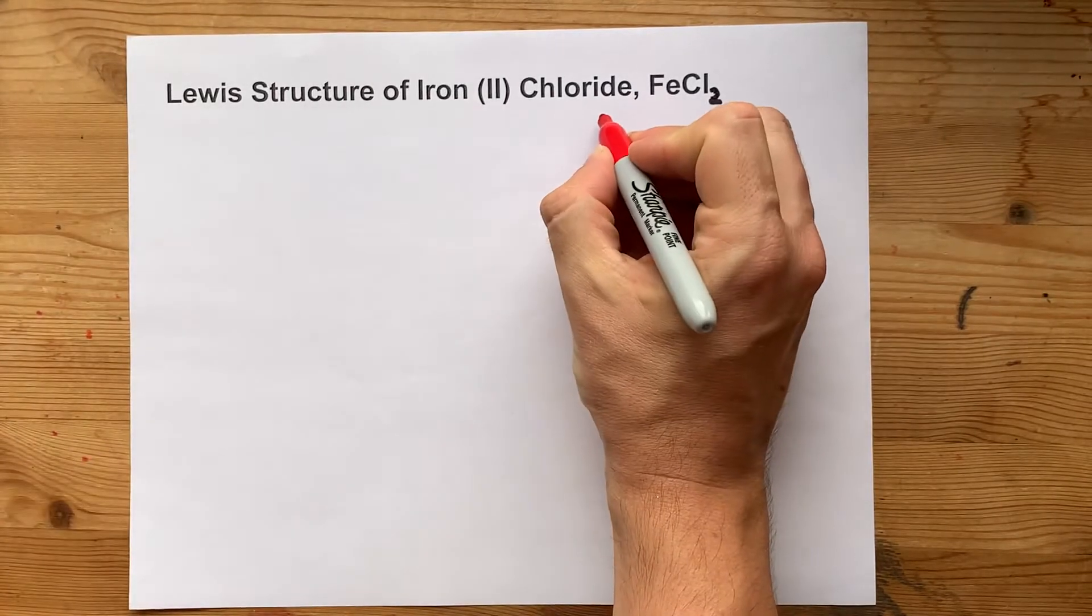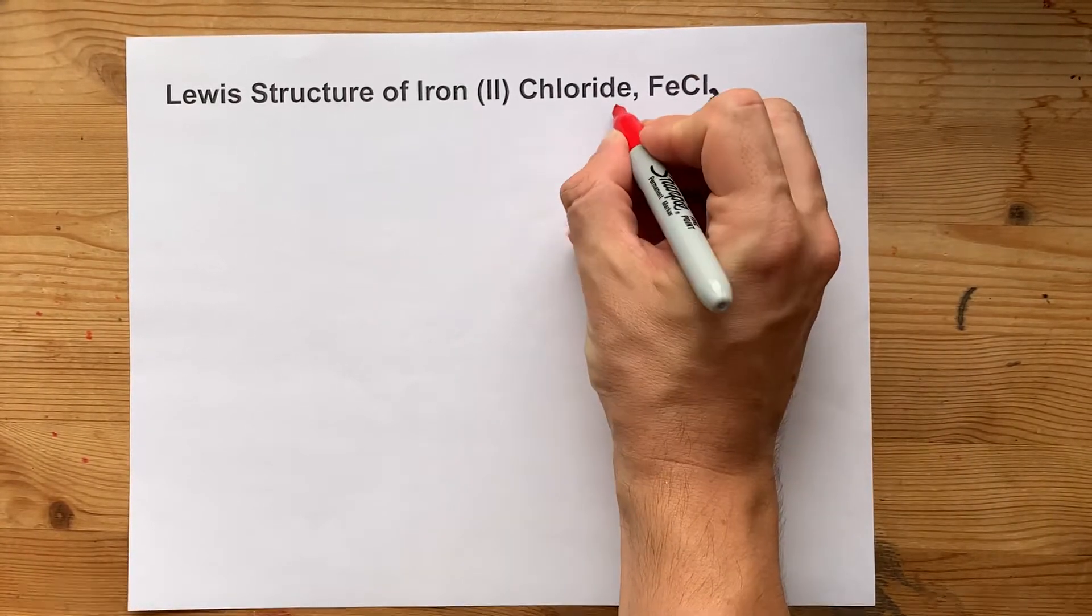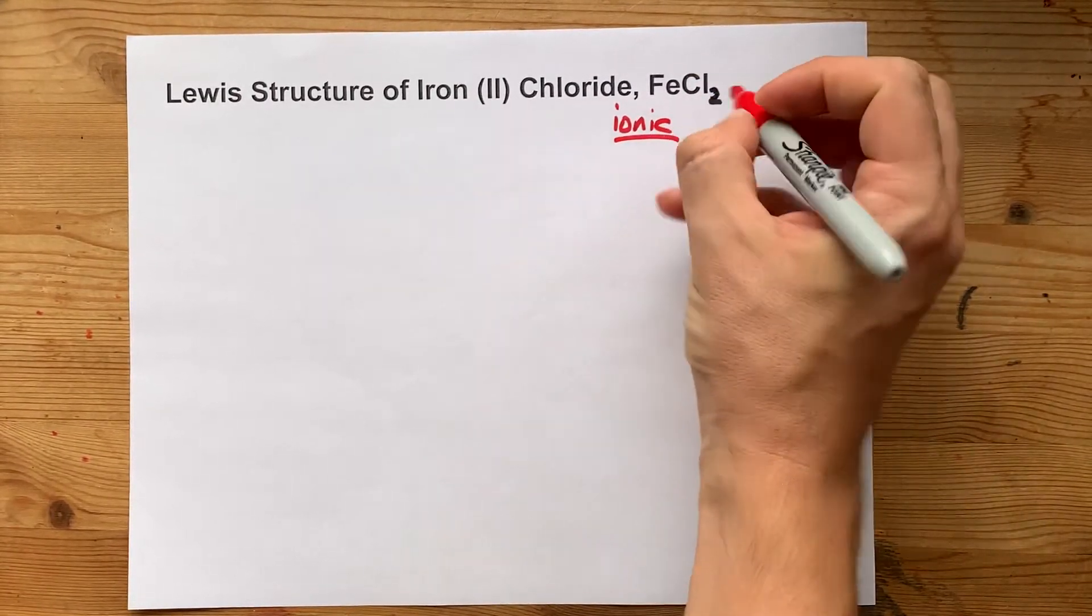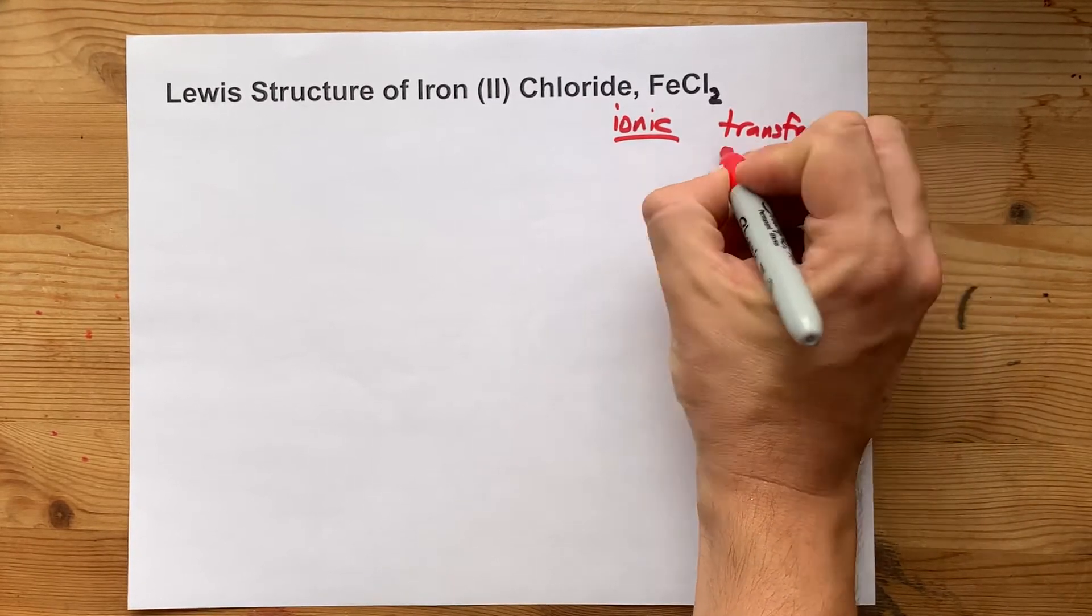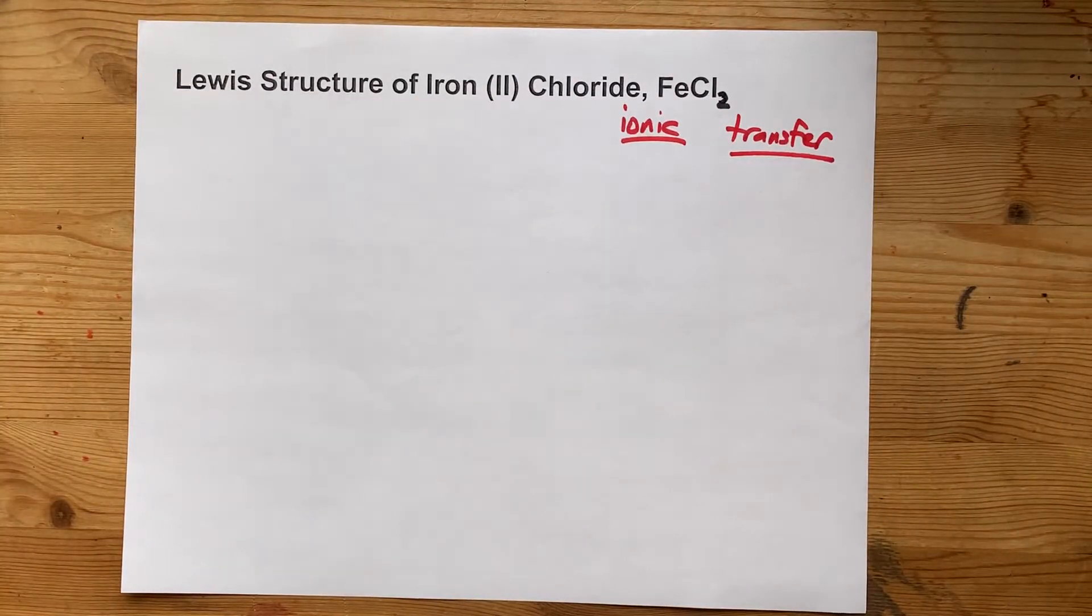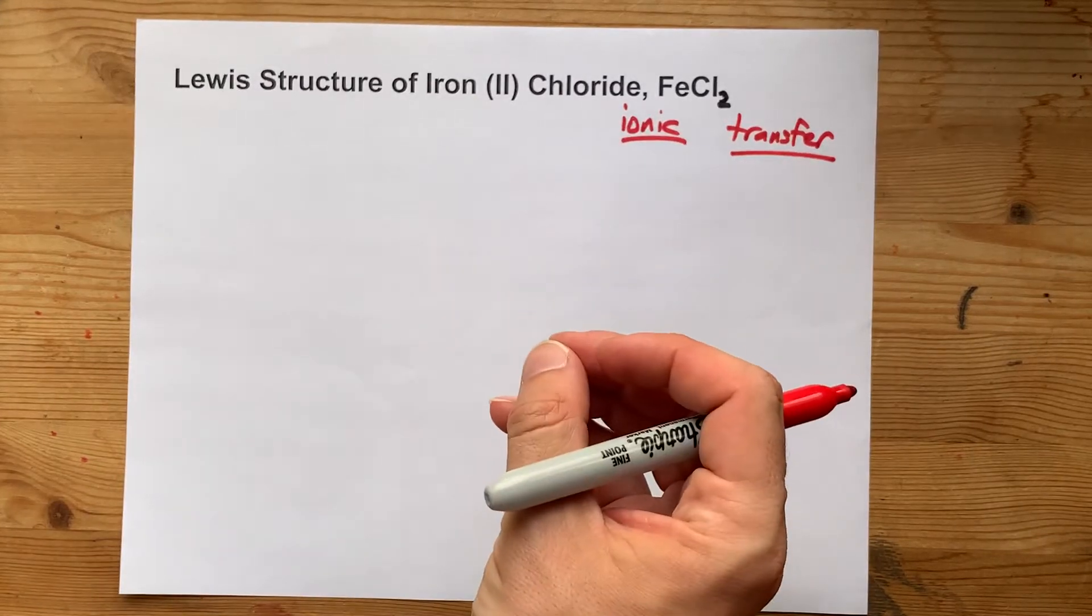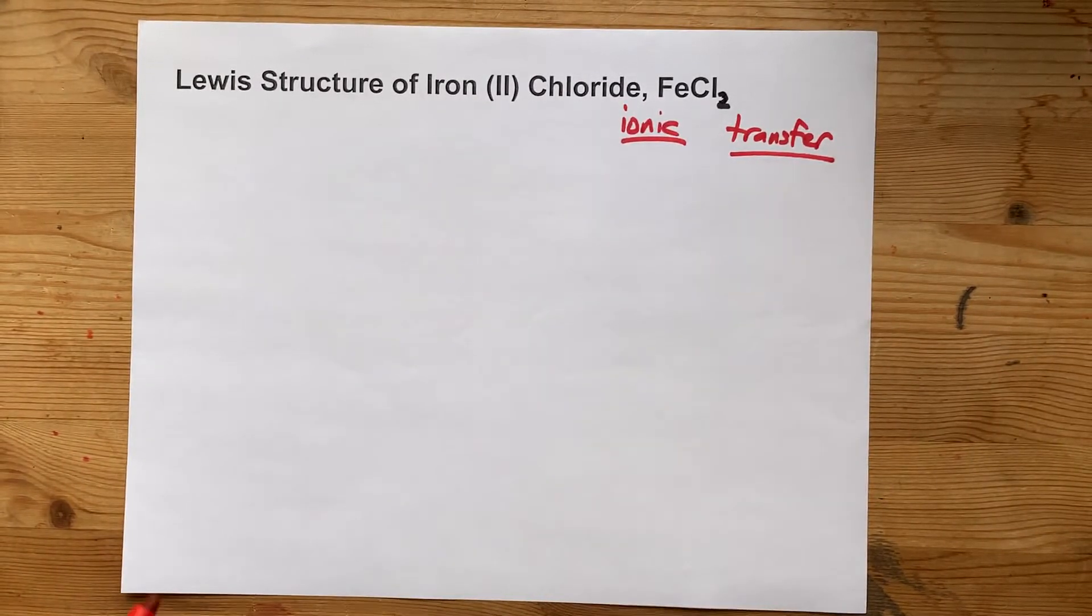When you have a metal and a non-metal bonding, it is an ionic bond, and that means that there is a transfer of electrons from the metal to the non-metal, not a sharing like there is for covalent compounds.